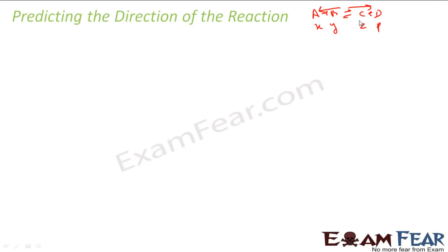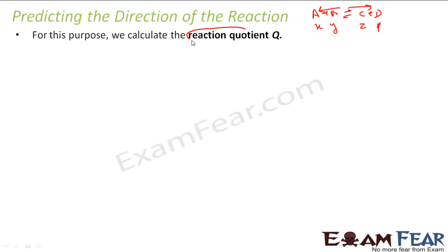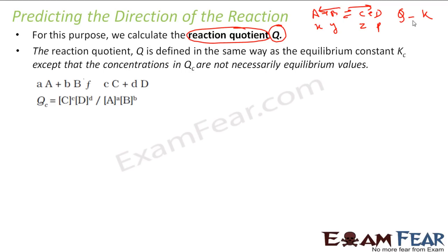So how do we find the direction of the reaction? We can do this if we know something called the reaction quotient. We find the reaction quotient and compare it with K to find the direction. The reaction quotient is similar to the equilibrium constant, except that it need not be calculated at equilibrium — it can be found at any point in time. Generally, we find it at T = 0, but it is not restricted to that.